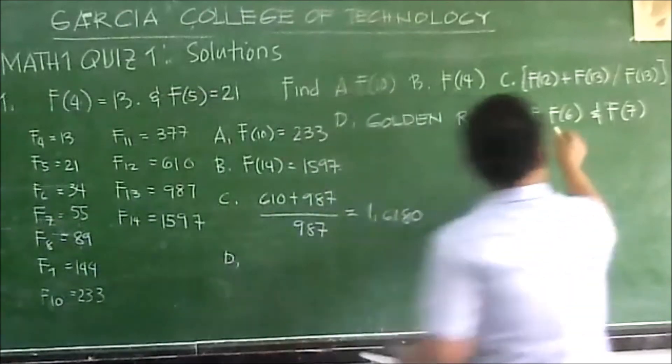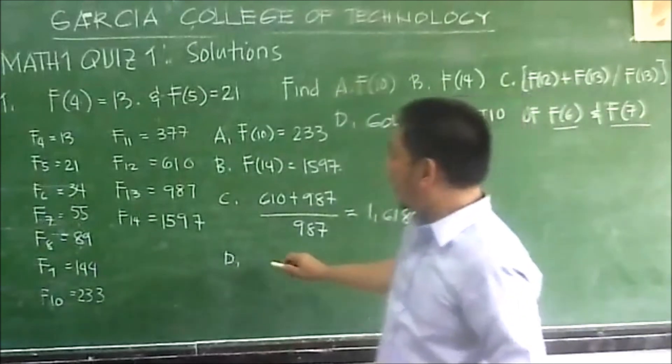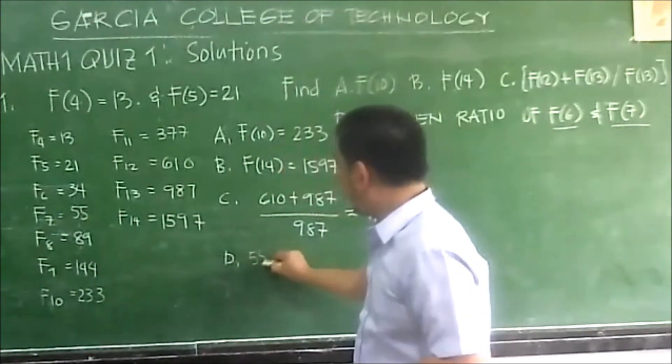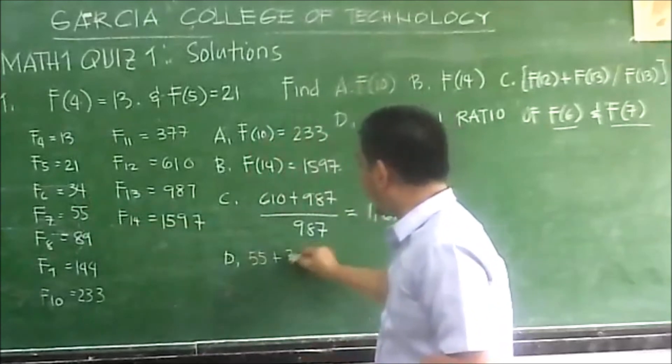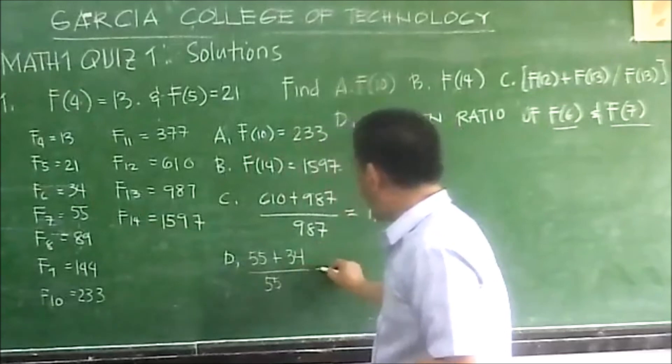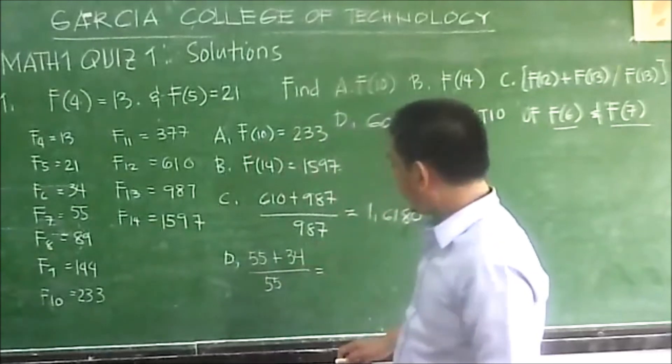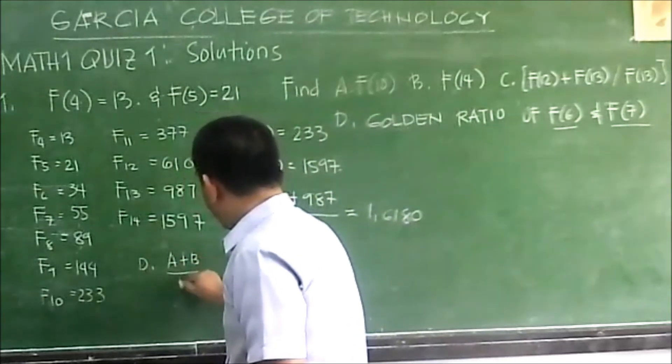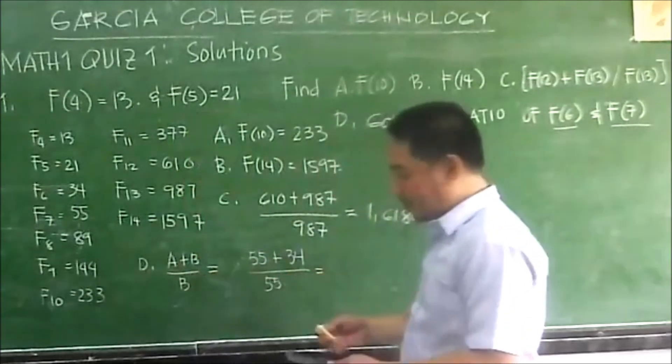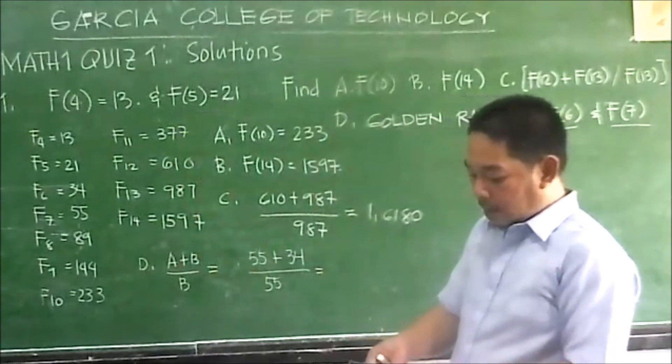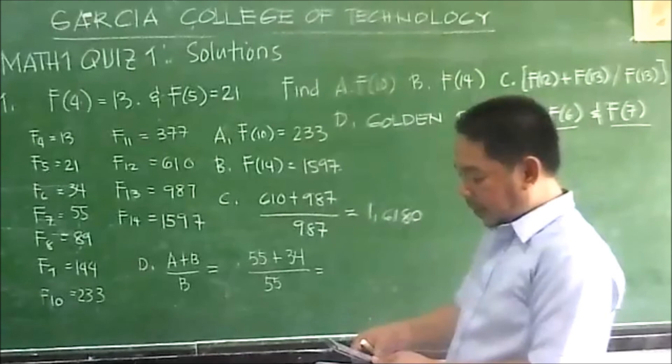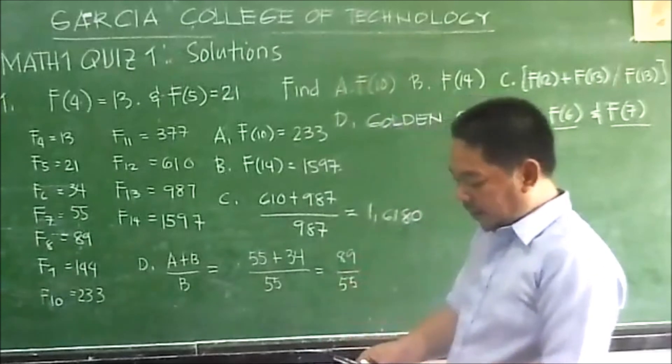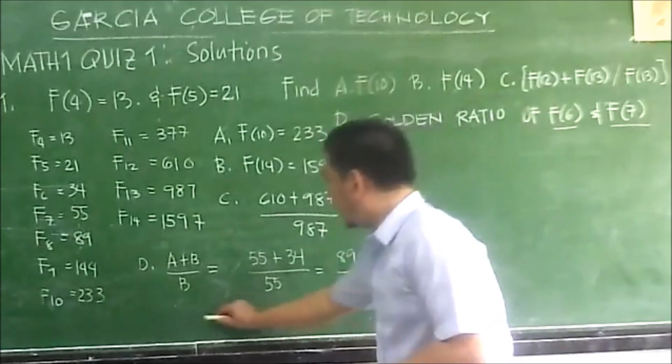Next, the golden ratio of F sub 6 and F sub 7. F sub 7 is 55. The golden ratio is 34 over 55. Take note, the golden ratio formula is a plus b over b. We have 55 plus 34, that's 89, over 55.